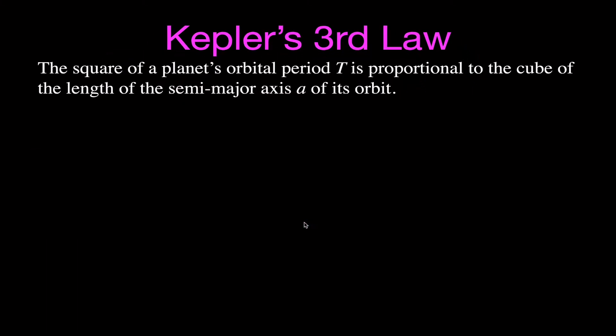Now we're going to start with Kepler's Third Law. Kepler's Third Law says that the square of the planet's orbital period T is proportional to the cube of the length of the semi-major axis A of its orbit. I have another video in the upper right-hand corner which goes over an explanation for all three of Kepler's Laws.